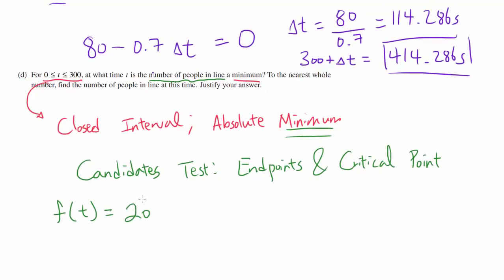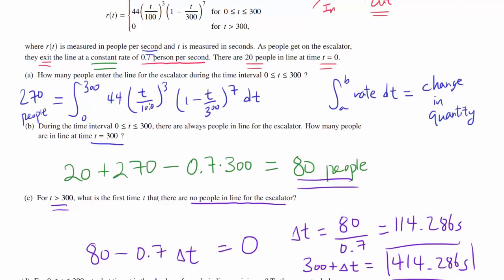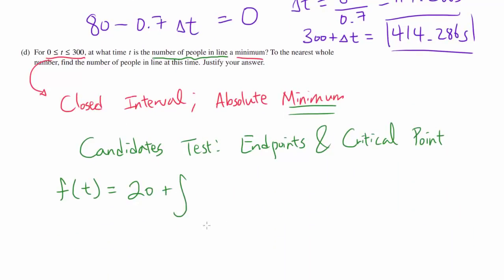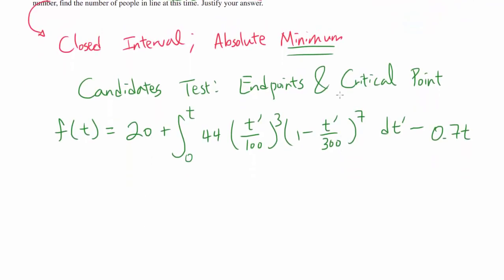Well, we are looking at the number of people in line. So let's make a function for the number of people in line. We are starting with 20 people. So we are starting with 20. And the people are entering at the rate of 44 and this craziness. So we want to integrate that. So if you want to find how many people are actually entering, you are going to integrate that from 0 to t. So let's write that down. 44 times (t/100)^3 times (1 - t/300)^7 dt. And just because I don't like using t here and t here, just to reduce confusion, let me just make this t prime. So t prime is the dummy variable. And t is the time we are looking at. And we are going to take away, so that's the people entering the line. We are going to take away 0.7 times time, because people are exiting at 0.7 people per second.